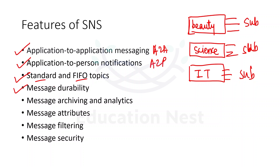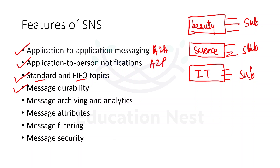Next is message durability. SNS uses a number of strategies that work together to provide message durability. Published messages are stored across multiple geographically separated servers and data centers. If a subscriber endpoint isn't available, SNS runs a delivery retry policy to ensure messages are sent. To preserve any messages that aren't delivered before the retry policy ends, you can create a dead letter queue.